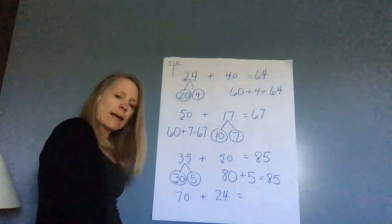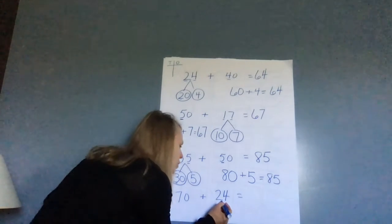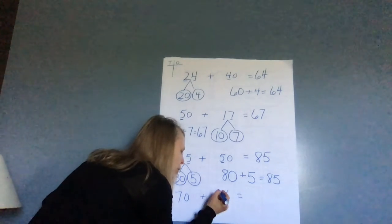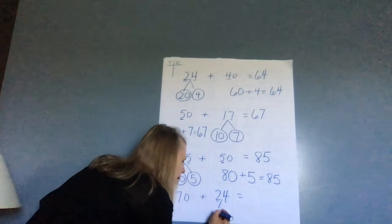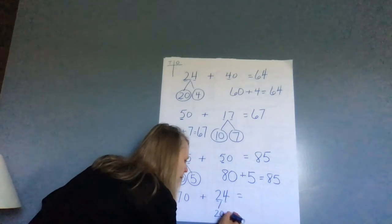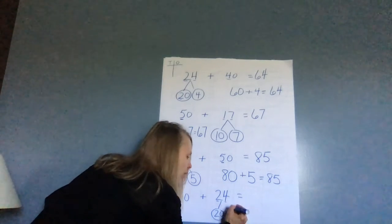Now I've got the last one. Which one am I breaking apart? 24. So if I have the two and the four, the two is in the tens place. So if I have two tens, I have 20 plus four ones, which is what? Four.